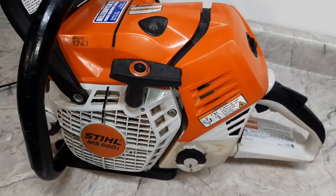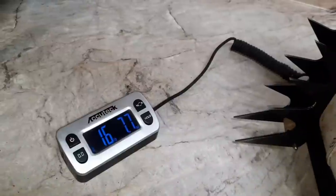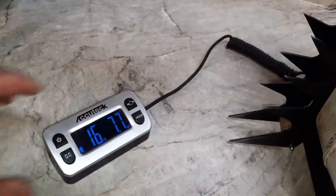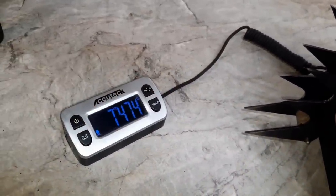Stihl 500i. This one has aftermarket large spikes. 16 pounds, 7.7 ounces. There's the metric.